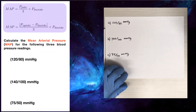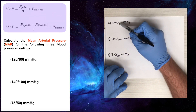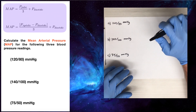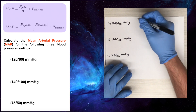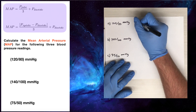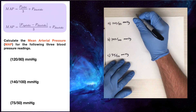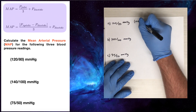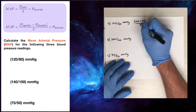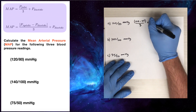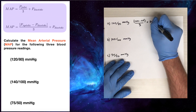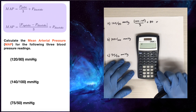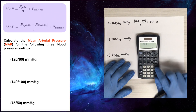Here are three examples. We've got blood pressures of 120 over 80, 140 over 100, and 75 over 50, and we're going to calculate the mean arterial pressure for each. Starting with the first one: to calculate the mean arterial pressure, we take the pulse pressure, which is the difference between systolic and diastolic — that would be 120 minus 80 — divide that by three, and then add on the diastolic pressure, which is 80. At the end, we remember to put on the units of millimeters of mercury.